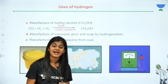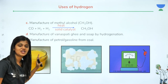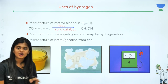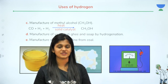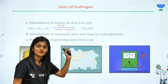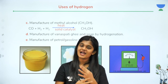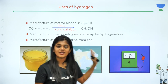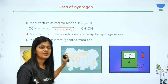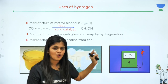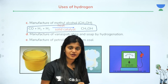Third use: manufacture of methyl alcohol (methanol). The basic reaction is carbon monoxide plus hydrogen, using a solid catalyst. The adsorption process occurs on the solid catalyst — carbon monoxide and hydrogen are adsorbed onto the solid catalyst, which is why the reaction proceeds quickly. This is also related to the water gas reaction seen earlier.